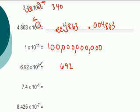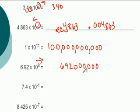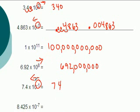6.92 times 10 to the 8th means we move the decimal to the right 8 spaces, giving us 692,000,000 — that's 692 million. 7.4 times 10 to the negative 1 means we move it back one space to the left, so it becomes 0.74.